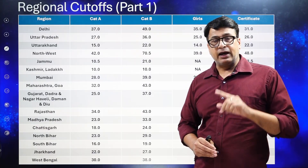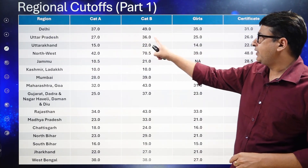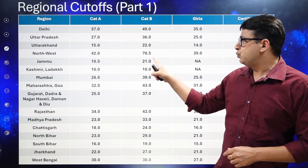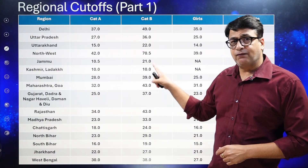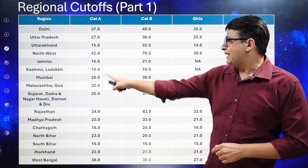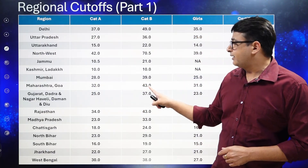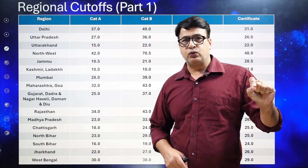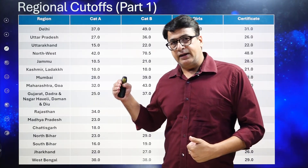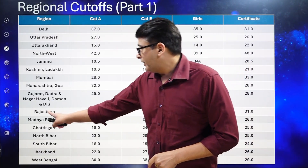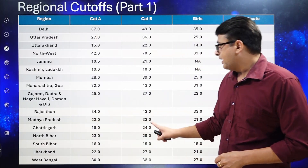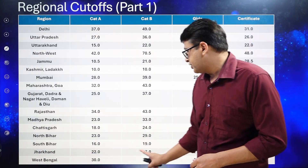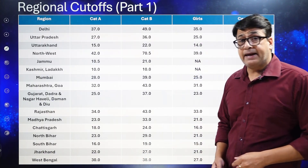In Uttar Pradesh, Category A is 27, Category B is 36, and the girl cutoff is 25. Uttarakhand: 15 and 22. Northwest: 42 and 70. Jammu: 10.5 and 21. Kashmir: 10 and 10. Mumbai: 28 and 39. Maharashtra: 32 Category A, 43 Category B. Gujarat/Dadar: 25 and 37. Rajasthan: 34 and 43. Madhya Pradesh: Category A 23, Category B 33. Chhattisgarh: 18 and 24. North Bihar: 23 and 29. South Bihar: 16 and 19. Jharkhand: 22 and 27. West Bengal: 30 and 38.